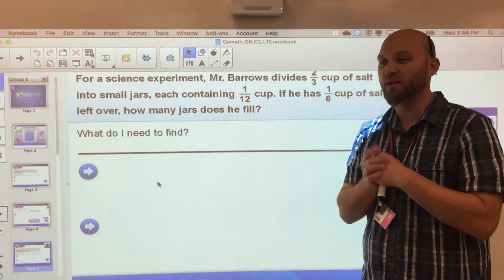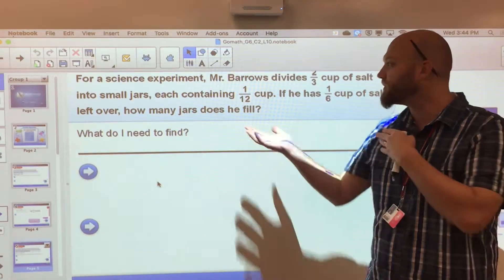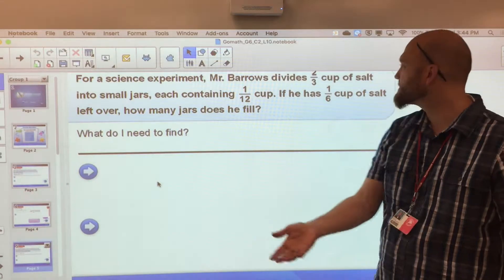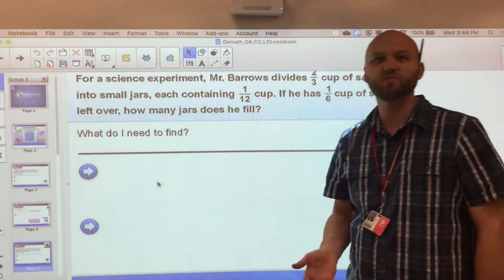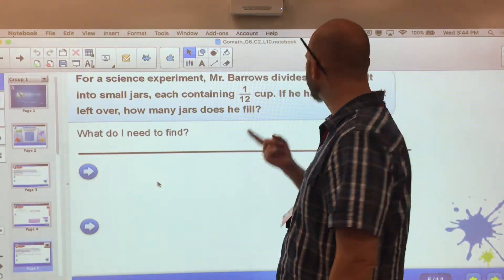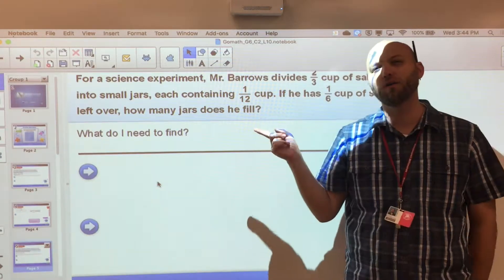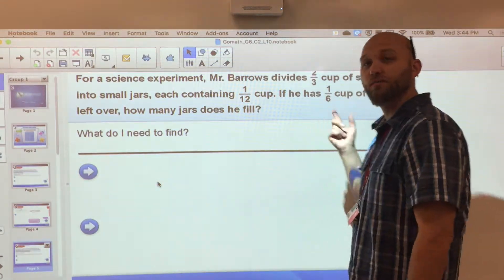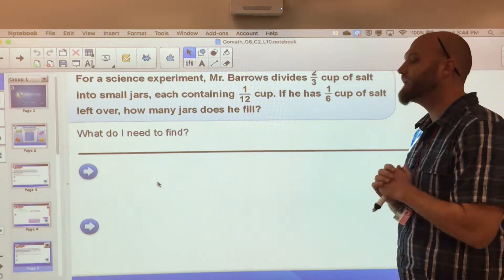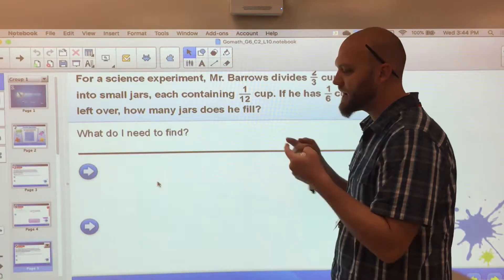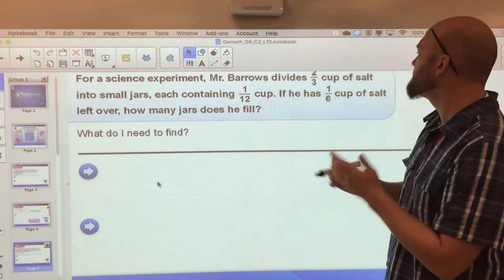The biggest part of this problem is, number one, I know that I have all different sizes of fractions—two-thirds, one-sixth, one-twelfth—but in my head I'm going, three, six, and twelve are all multiples of three, so that might come in handy later if we need to find some common denominators.